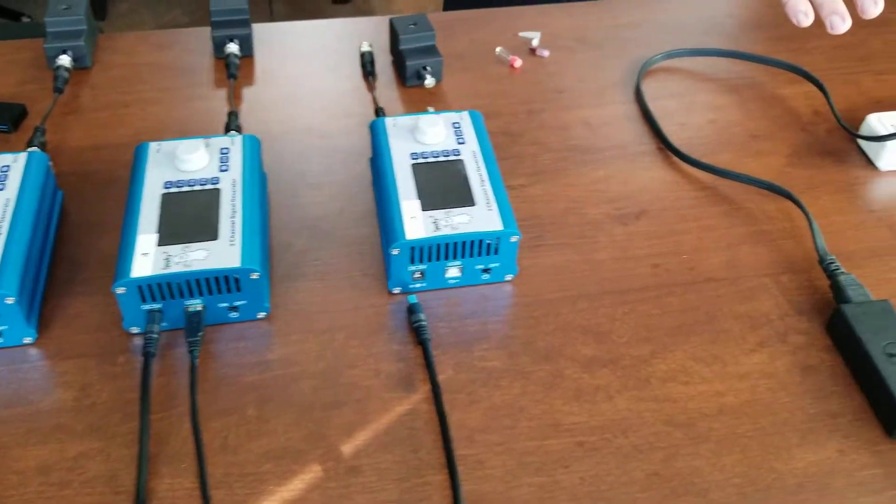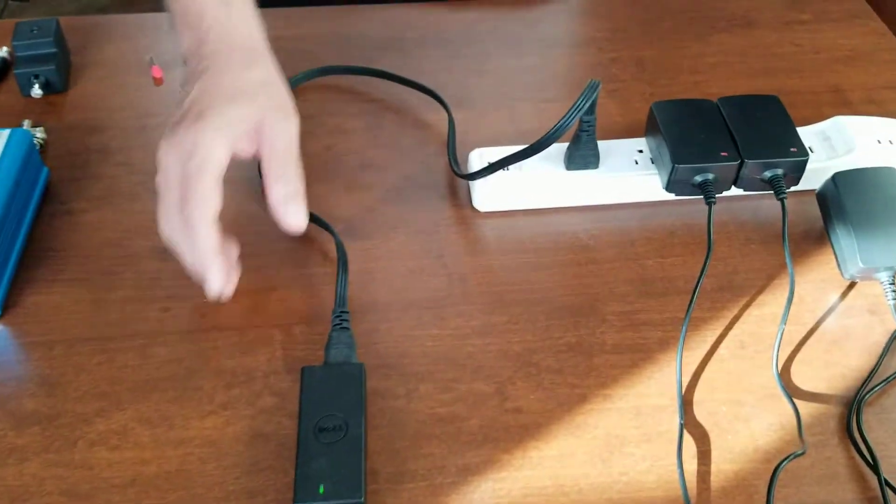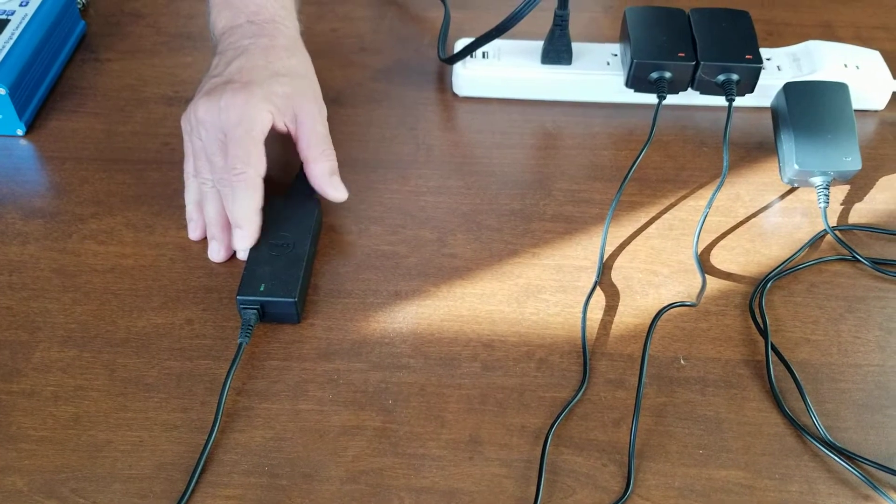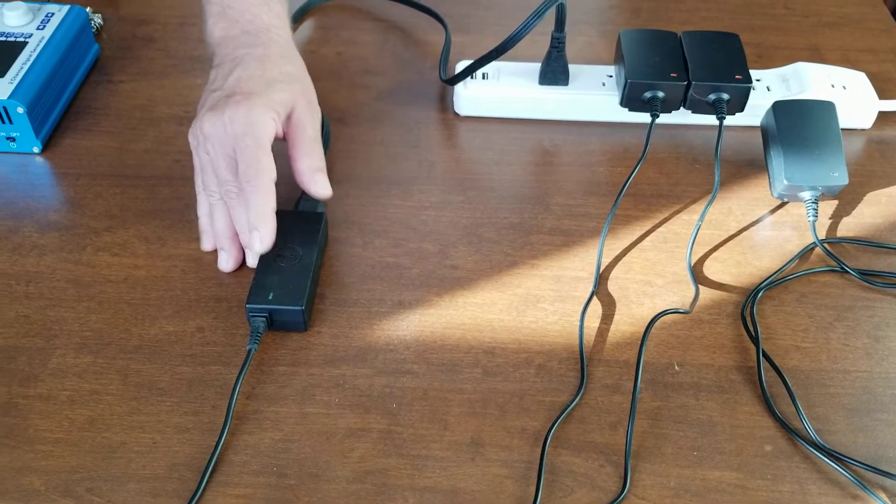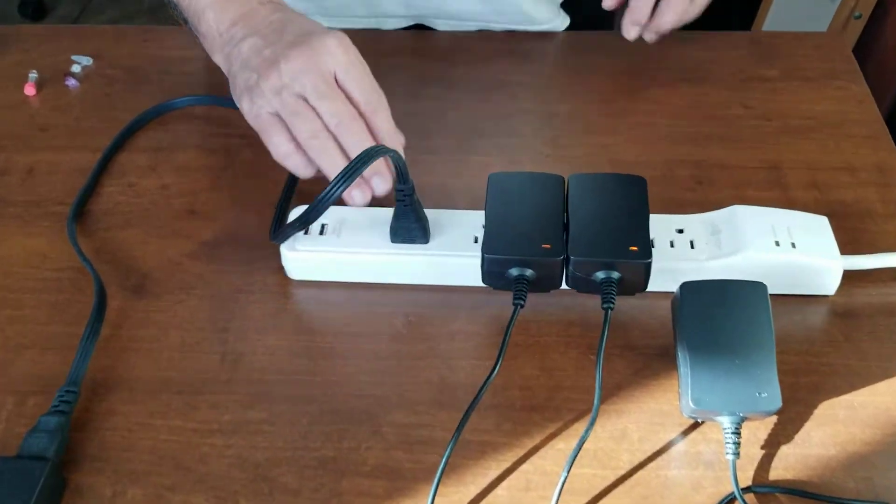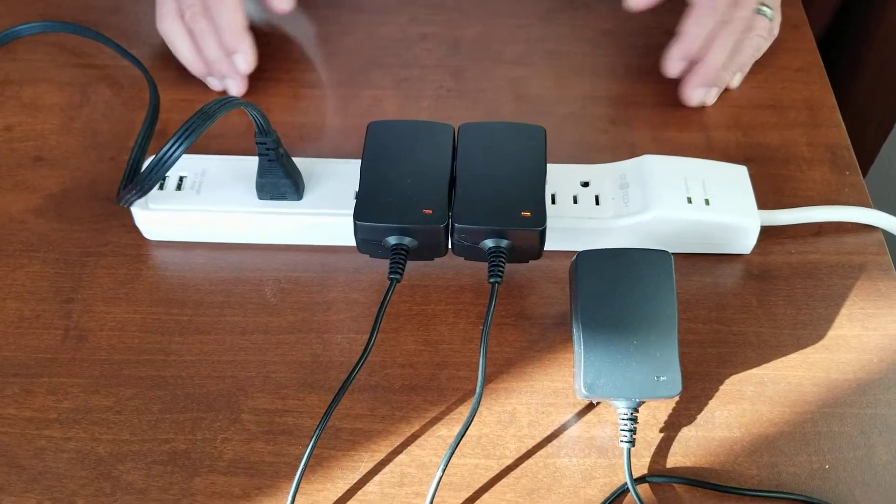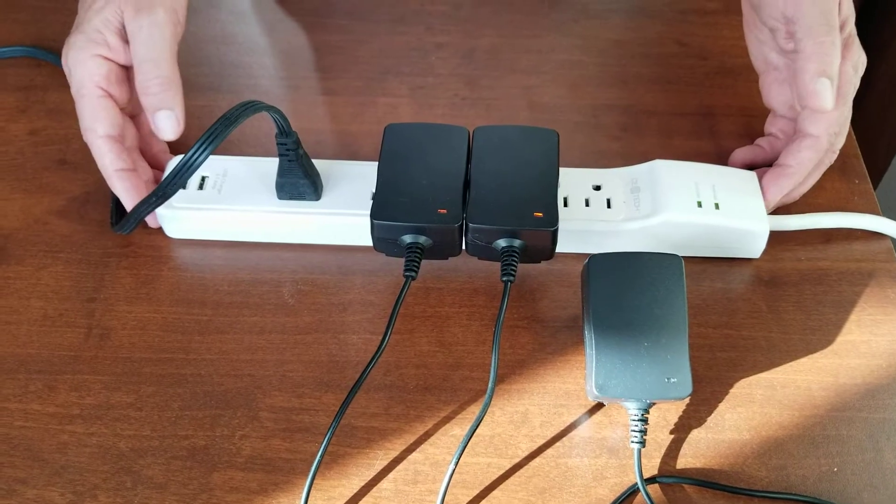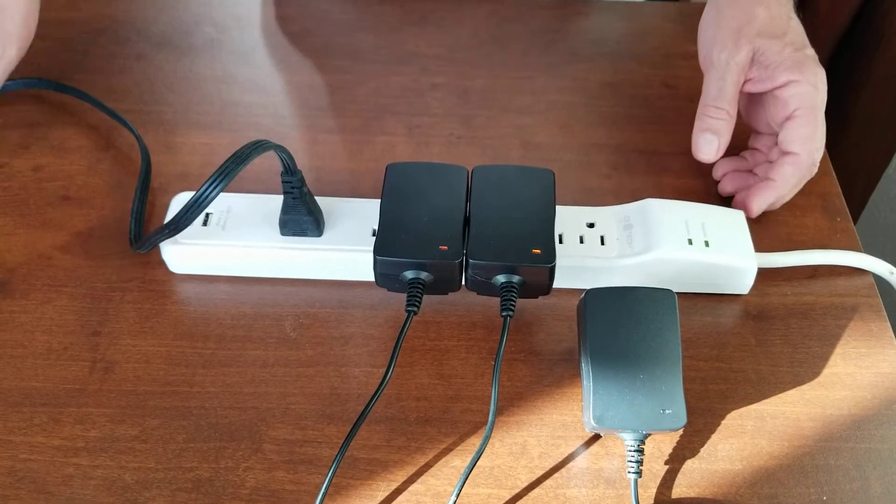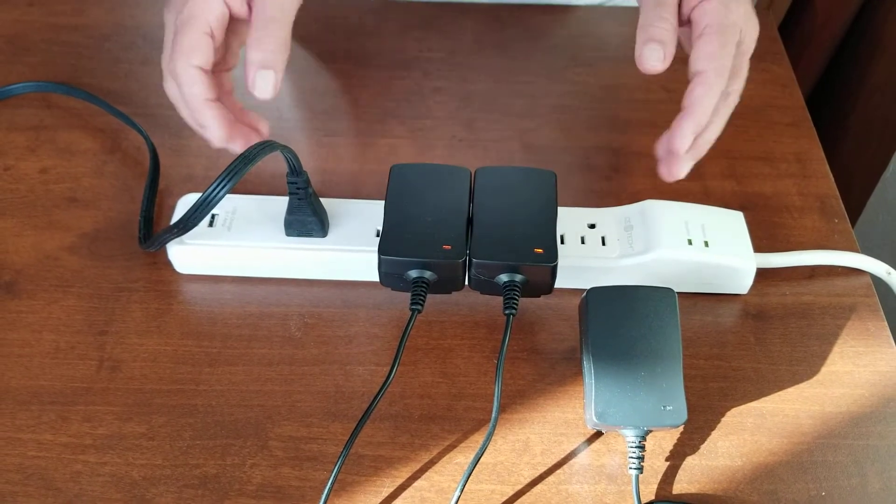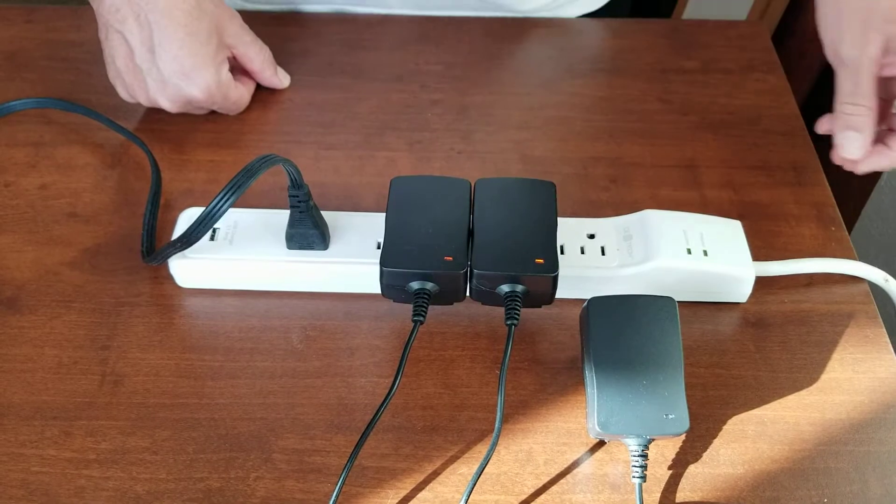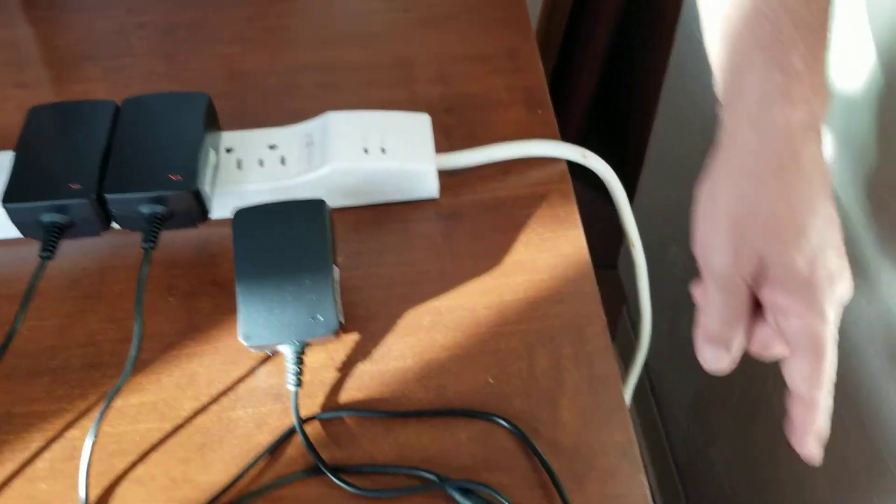Moving over here to the power section. This is the little brake power supply for the Dell. Same as always. Plugged into a surge suppressing power strip. And these are the power supplies for the generators. So this is the kind of power strip typically that you're going to want to try to get. For a 4 generator system, you're going to need one a little bit longer or a dual. This is plugged into a dual. This is plugged into the wall right down there.